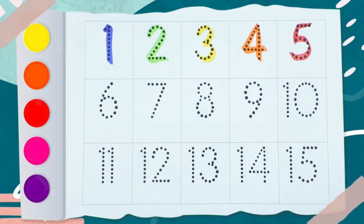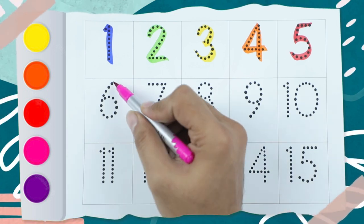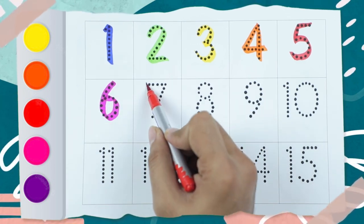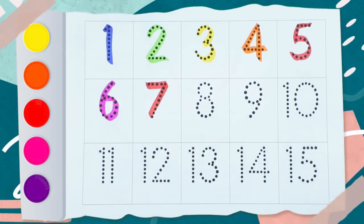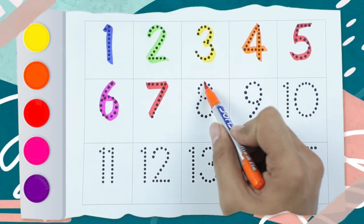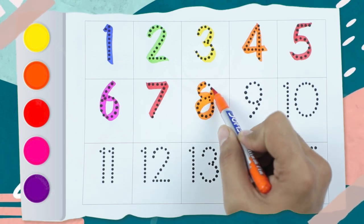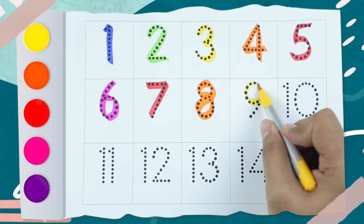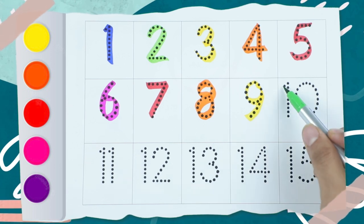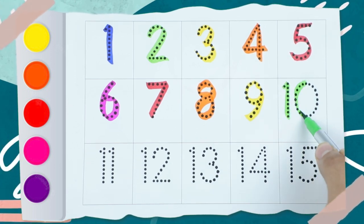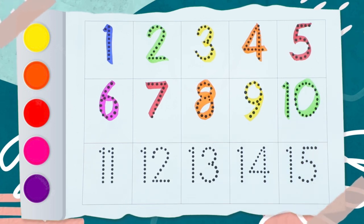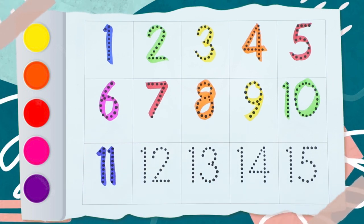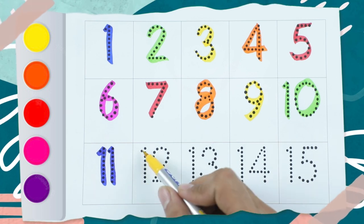Number 5 with red color. Now pink color — number 6 is red color. Number 7 is orange color. Number 8 is yellow color. Number 9 is green color. Number 10 is blue color.